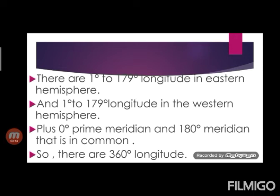In Eastern Hemisphere, there are 1 degree to 179 degree longitude. And in Western Hemisphere, there are 1 degree to 179 degree longitude. Plus 1 degree of Prime Meridian and 180 degree meridian that is in common. So, all together, it makes 360 longitudes.